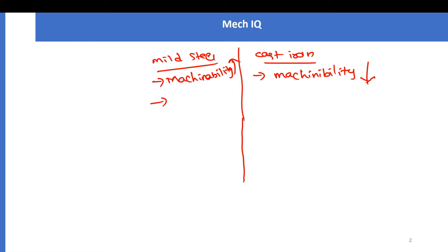Mild steel has a comparatively lower melting point. Cast iron has a high melting point. Mild steels are generally soft, while cast irons are generally very hard.